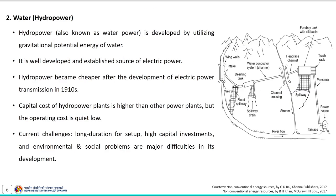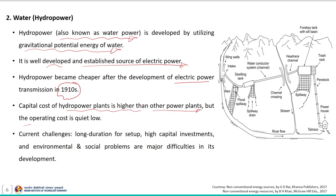The next major source of energy is hydropower, also known as water power, developed by utilizing the gravitational potential energy of water. It is a well-developed and established source of electric power. Hydropower became cheaper after the development of electric power transmission in 1910. The cost of a hydropower plant is higher than other power plants, but operating cost is quite low. However, it has certain challenges including long duration for setup, high capital investment, and environmental and social problems.